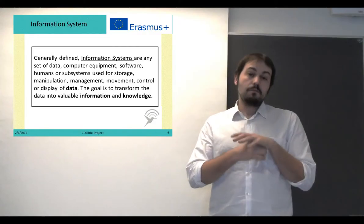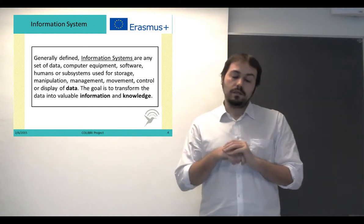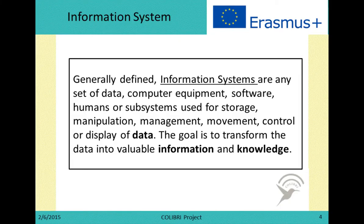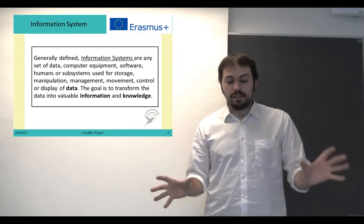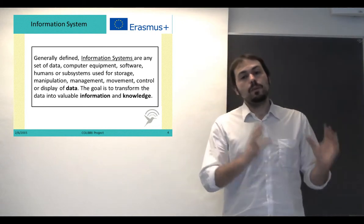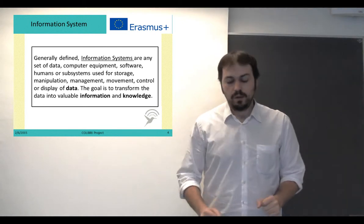And then, information systems. Probably most of you have dealt with information systems in the past, but formally defined, information systems are any set of data, computer equipment, software, humans, or subsystems for storage, manipulation, management, movement, control, or display of data. So in the end, it is a lot of elements with the focus of manipulating data, and the goal is to move from that data to information and later to knowledge.